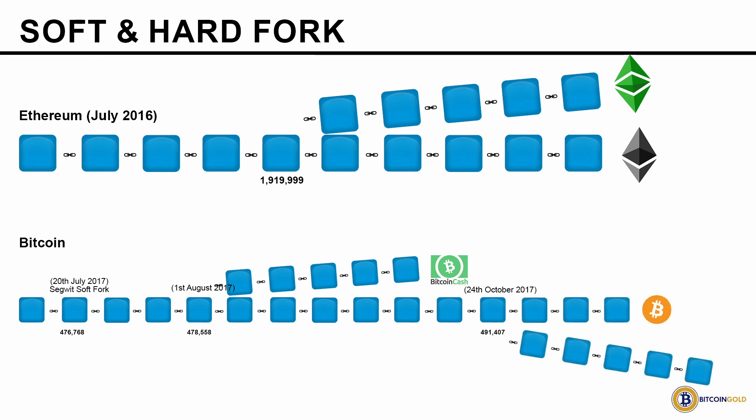So three forks occurred in the Bitcoin blockchain: a soft fork on 20th July 2017, a hard fork on 1st August 2017, and another hard fork on 24th October 2017. This can happen very freely because it is a distributed system — the participants decide the future for themselves. If someone is unhappy and there is enough support, a fork can happen. There is no central authority to say no, and that is the beauty of the system.